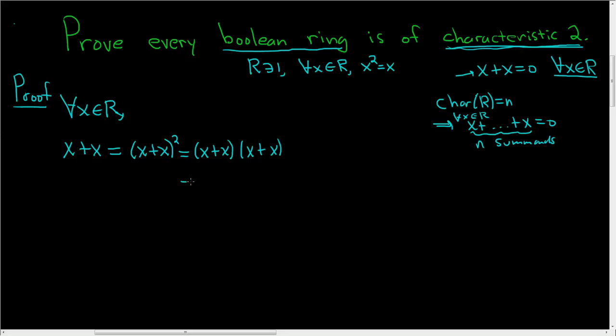Then we can use the distributive property to write this as x times x plus x plus x times x plus x. And distributing again, we end up with x squared plus x squared plus x squared plus x squared.